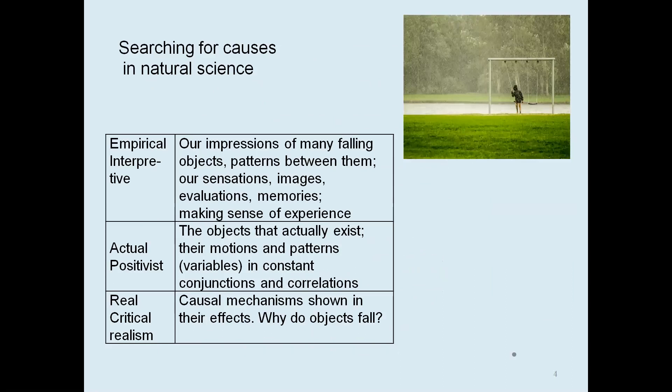The example is watching falling objects like raindrops. The empirical-interpretive approach would be to look at our impressions of the many falling objects, the patterns between them, and our sensations, images, evaluations, and memories as we make sense of experiences — and that sort of stops there. Positivists would go beyond that to accept that there really are independent raindrops separate from our view of them, asking why raindrops are falling, looking at their motions, patterns, how many are falling, when and how they fall — but again, stopping at the visible or the felt.